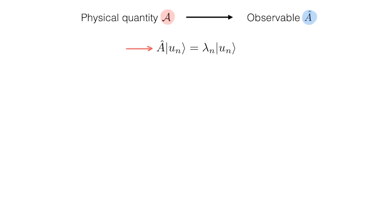In this equation, λn are the eigenvalues, and un are the eigenstates. If the names eigenvalues and eigenstates don't sound familiar to you, then you should first check the video on eigenvalues and eigenstates linked in the description, because in this video I will assume that you know what they are, and you also know how to calculate them for any operator A.